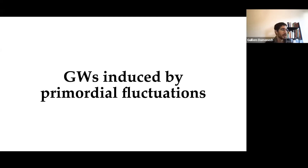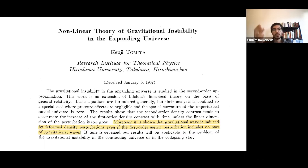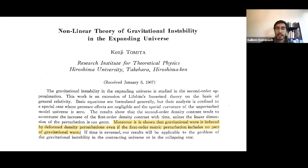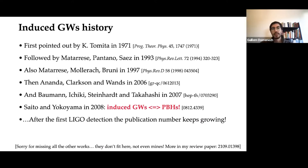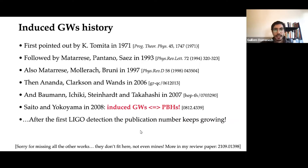Let me give quick credit to the first to notice this effect: Japanese physicist Kenji Tomita, a long time ago. It was rediscovered by Matarrese in the nineties, followed by nice work by people in Portsmouth and Baumann. It wasn't until 2008 that Saito and Yokoyama made the connection between induced gravitational waves and primordial black holes. Then since LIGO detected the first black hole merger, there have been many papers — see my review for the full history.